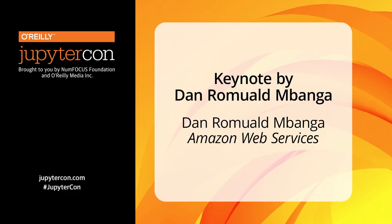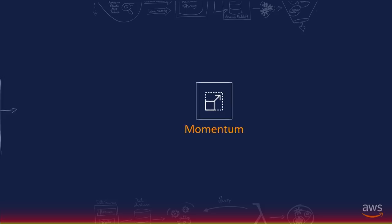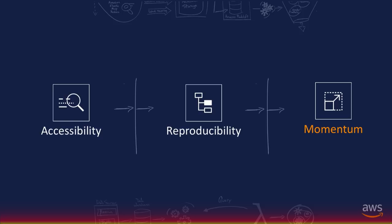My name is Dan Banga, a leader of business development efforts for the machine learning platform at AWS. Today I want to talk about momentum. Momentum, the way I understand and define it, is the capacity for you and your business to leverage your skill and a certain velocity that is technically enabled by the cloud to move your business forward. To achieve some kind of momentum, you also need a couple of other constructs: accessibility and reproducibility.